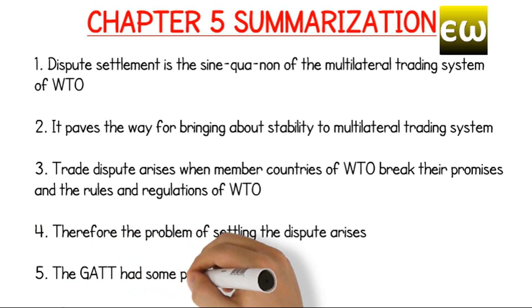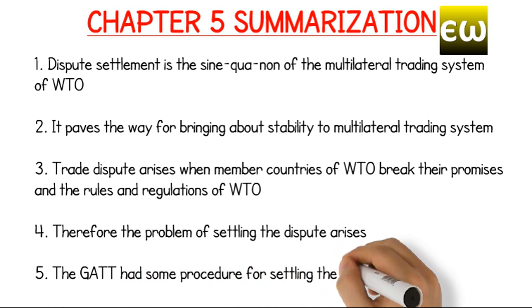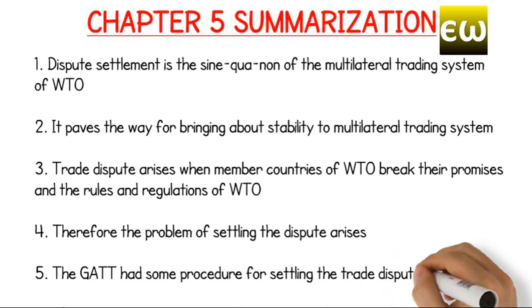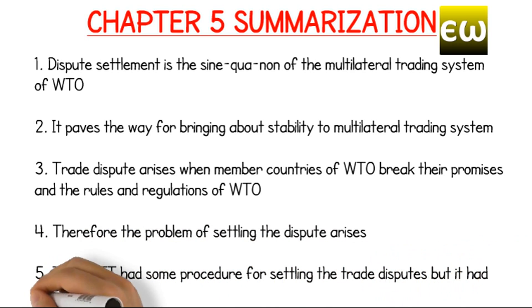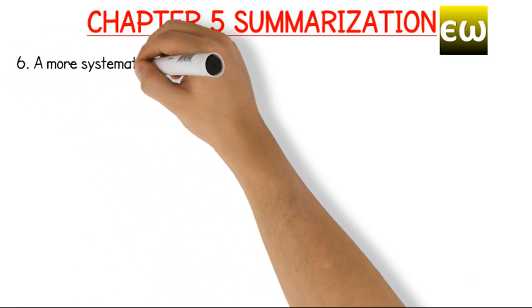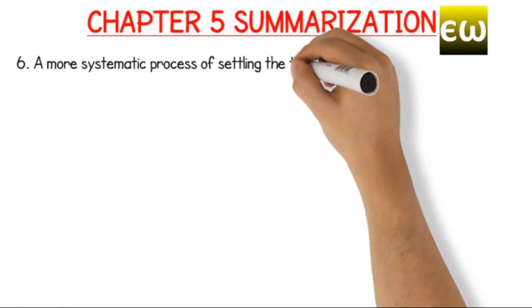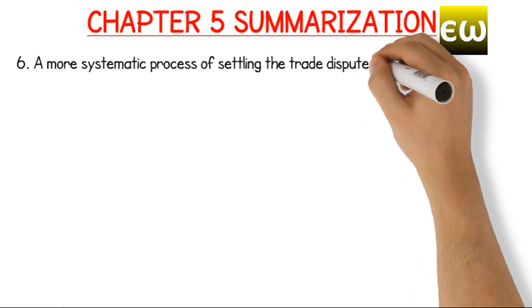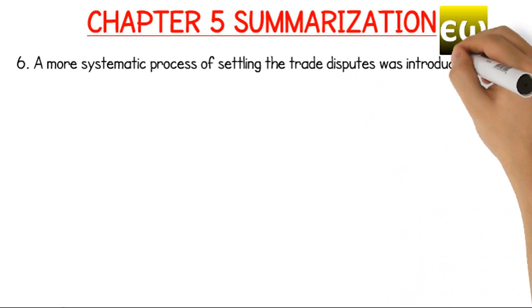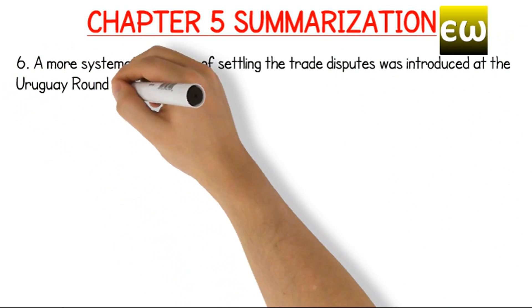The GATT had some procedure for settling trade disputes but it had no fixed timetable. A more systematic process of settling trade disputes was introduced at the Uruguay Round Agreement.